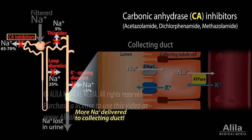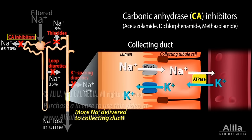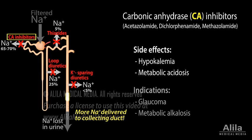Increased delivery of sodium to the collecting duct increases its reabsorption at this site through epithelial sodium channels, in exchange for a greater potassium loss, and may cause hypokalemia. Loss of bicarbonate also affects acid-base balance, producing metabolic acidosis. Carbonic anhydrase inhibitors are rarely prescribed for cardiovascular diseases; they are mainly used in the treatment of glaucoma.